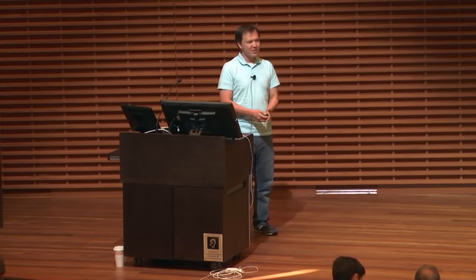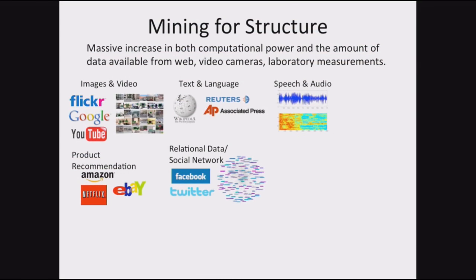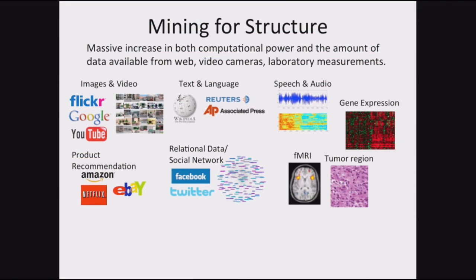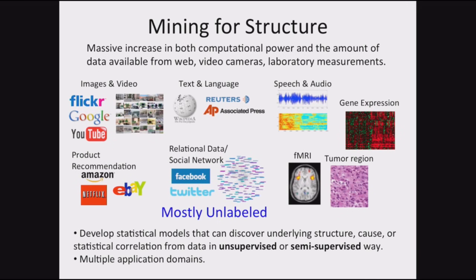What's the motivation? The motivation is that the space of data that we have today is just growing. If you look at the space of images, speech, social network data, scientific data — I would argue that most of the data we see today is unlabeled. So how can we develop statistical models that can discover interesting structure in an unsupervised or semi-supervised way? And how can we apply these models across multiple different domains?